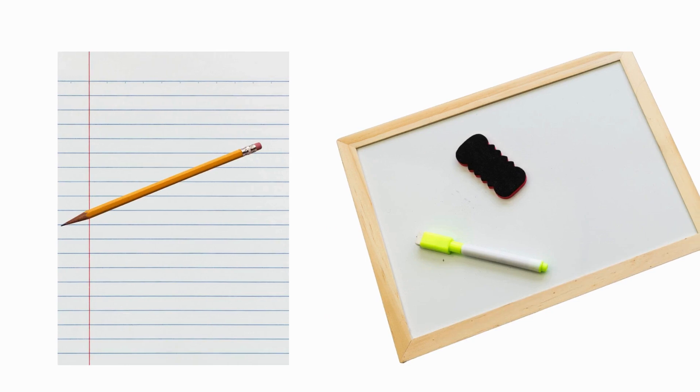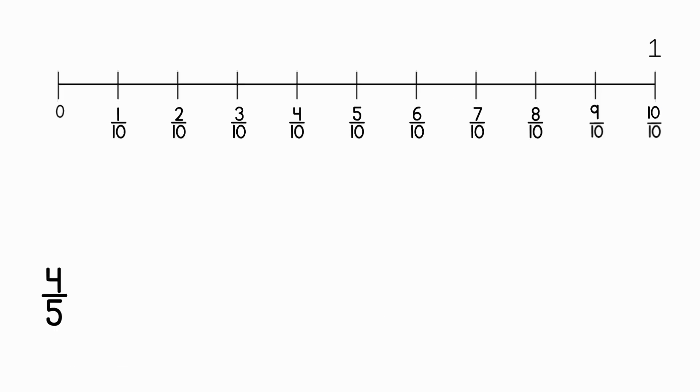Time for you to try one on your own. Grab a pencil and paper, or a wipe off board. You can pause the video while you gather your supplies. At what point on this number line can you plot four fifths? Remember, we want to make the fractions equivalent, so they need the same denominator. You need to find a fraction with a denominator of 10 that is equivalent to four fifths. Pause the video now while you work. Press play when you're done.